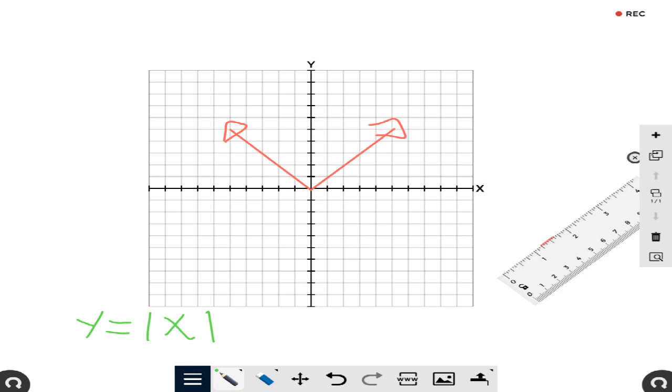All that means is that anything inside these absolute value bars is always going to be positive.